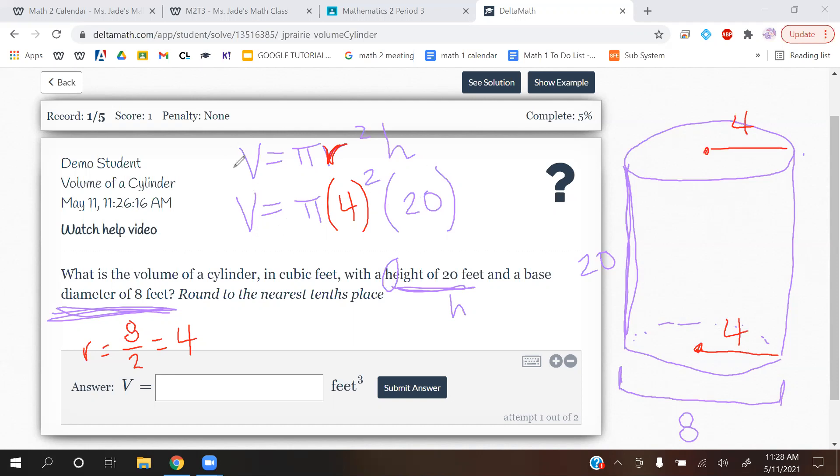This is the formula for finding the volume of a cylinder, and then this is the radius given the diameter, so radius would be diameter divided by 2. Okay, so.